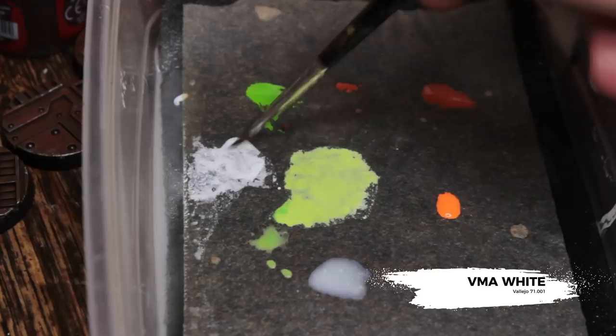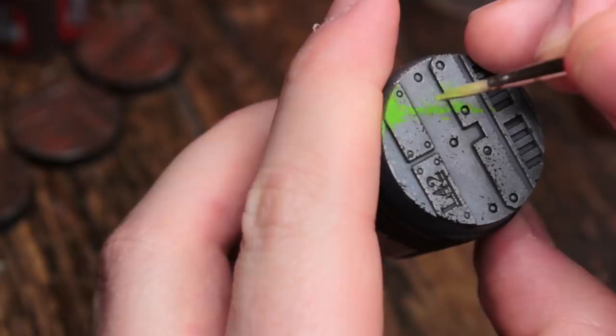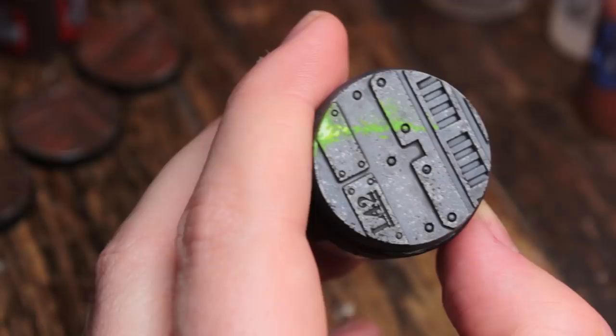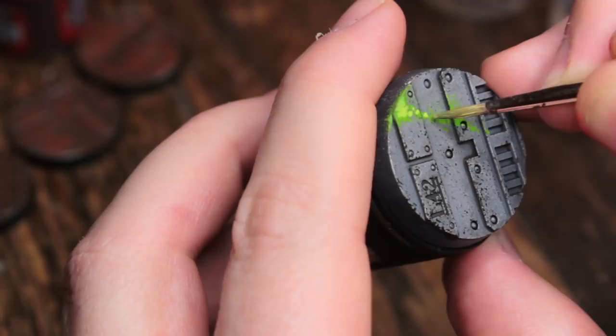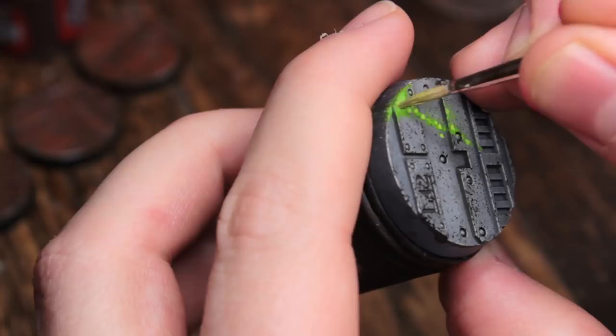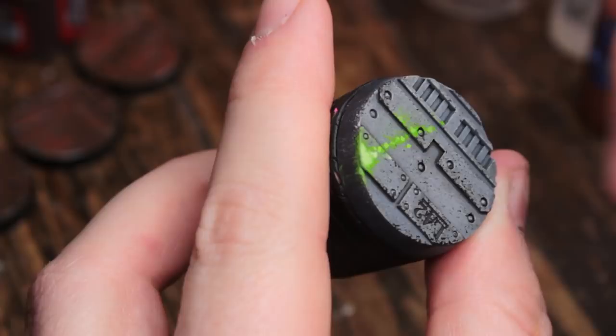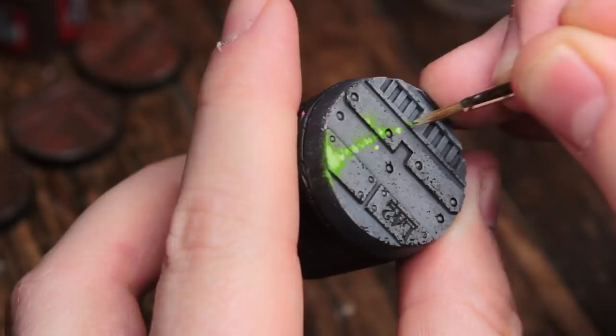Now we're going to mix some Moot Green with some VMA White, you could use White Scar from GW. And we're going to create a 50-50 mix here to give us a nice light green, but Moot Green is so bright that it actually looks a bit fluorescent. And we're just going to create some little dots and kind of build up the inner part of the slime here. This is to make it look a bit like it's glowing. And here I've mixed a little bit more white into my mix and again, increasing that glow effect by just painting it further into the middle.